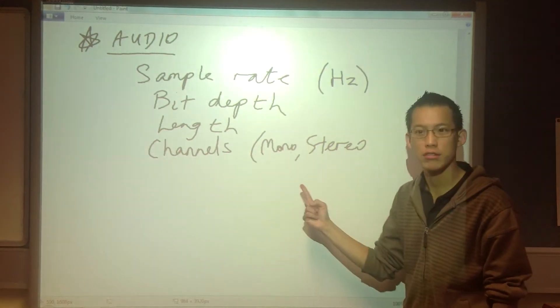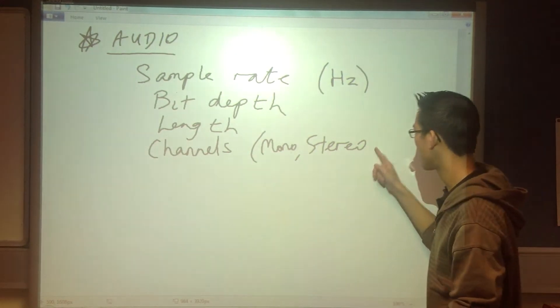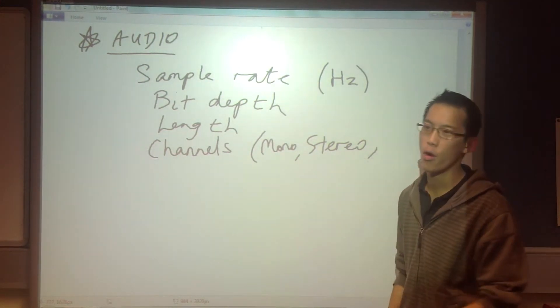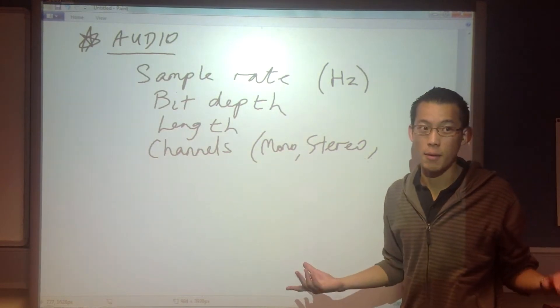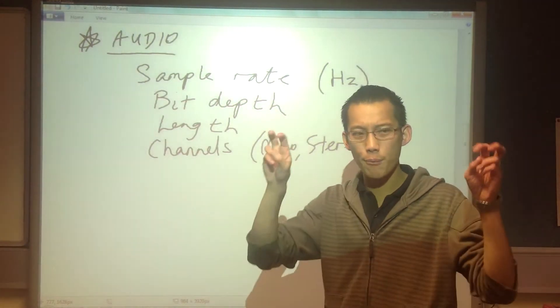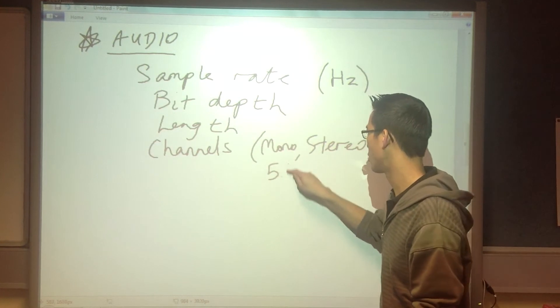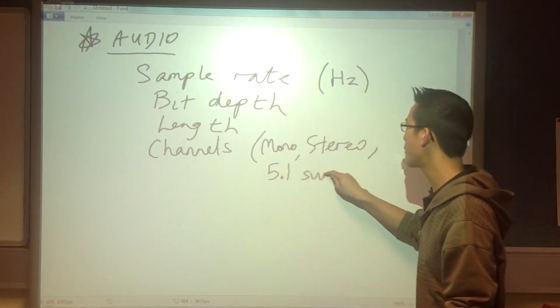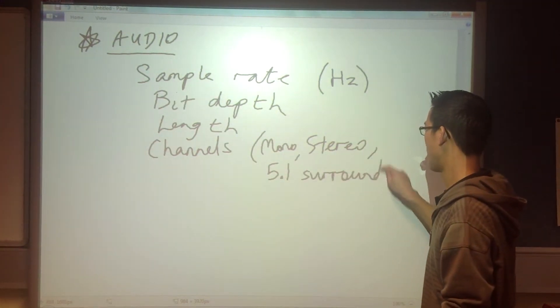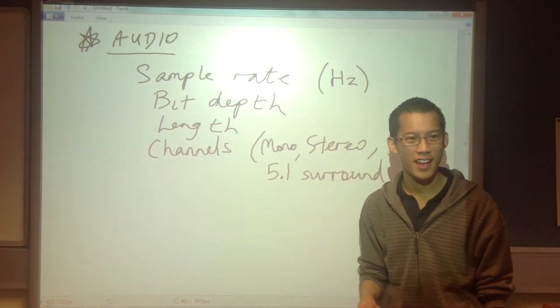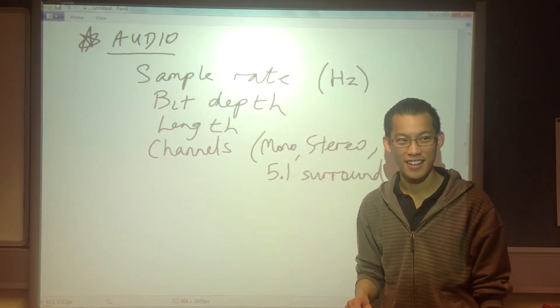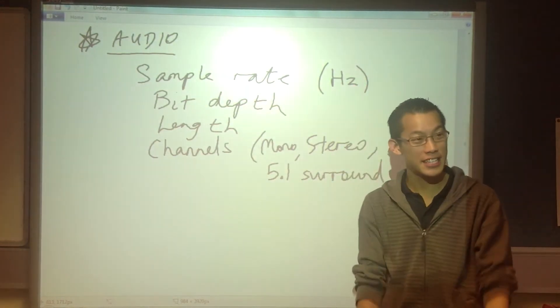You can have more, which is often called multi-track or surround sound is the most common example. So surround sound is like 5.1 - 5.1 surround. What does that mean? How many channels does 5.1 surround sound have? It has six. They're fooling you. Six, right.